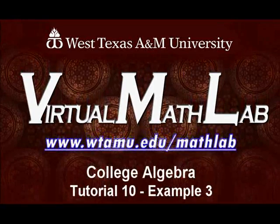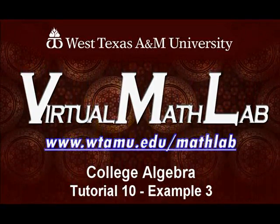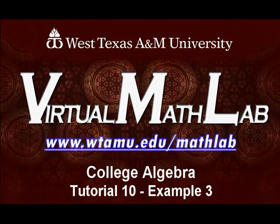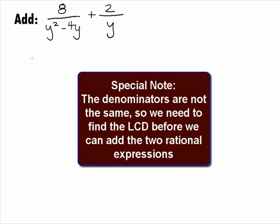Hi, welcome to the WTAMU Virtual Math Lab. This video will step you through College Algebra Tutorial 10 Example 3. In this example, we want to add the two rational expressions 8 over y squared minus 4y plus 2 over y. Note that the two denominators are not the same, so we will need to find the least common denominator, or LCD, before we can add these two rational expressions.